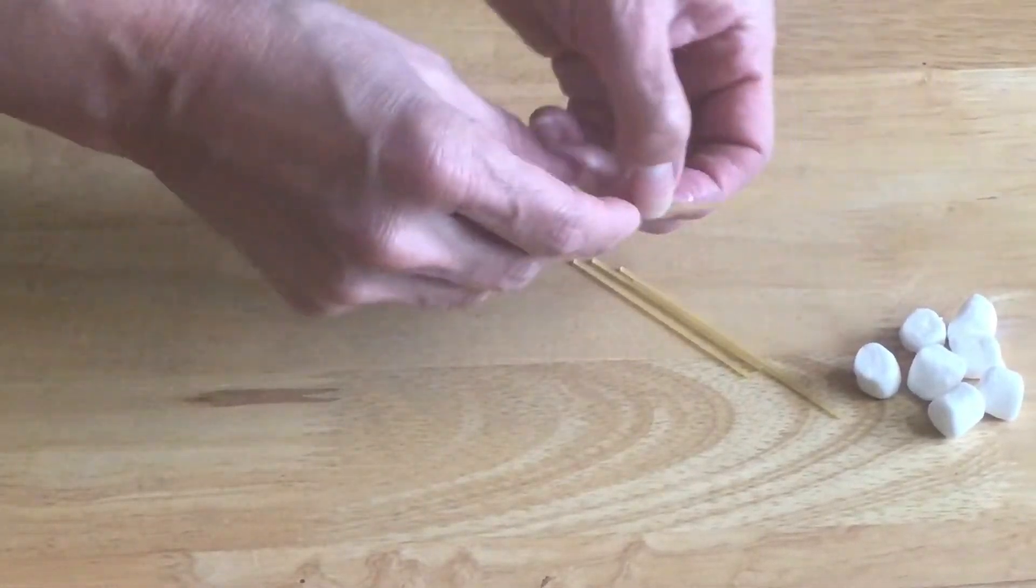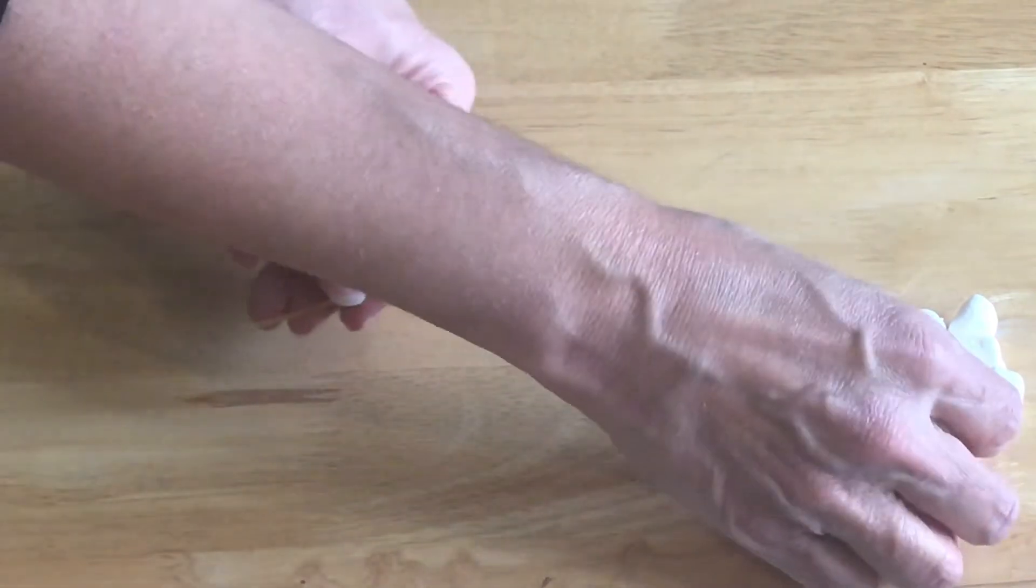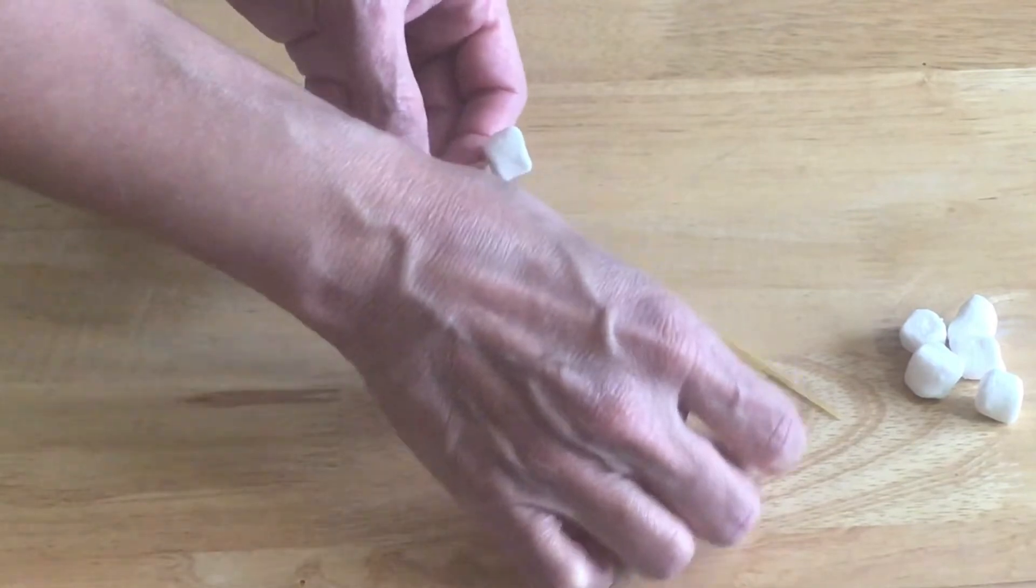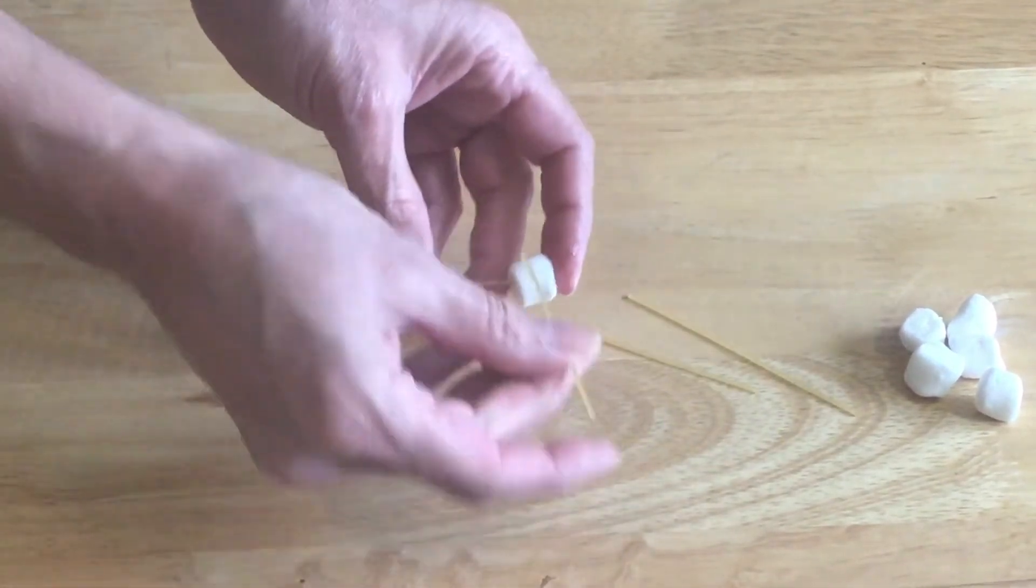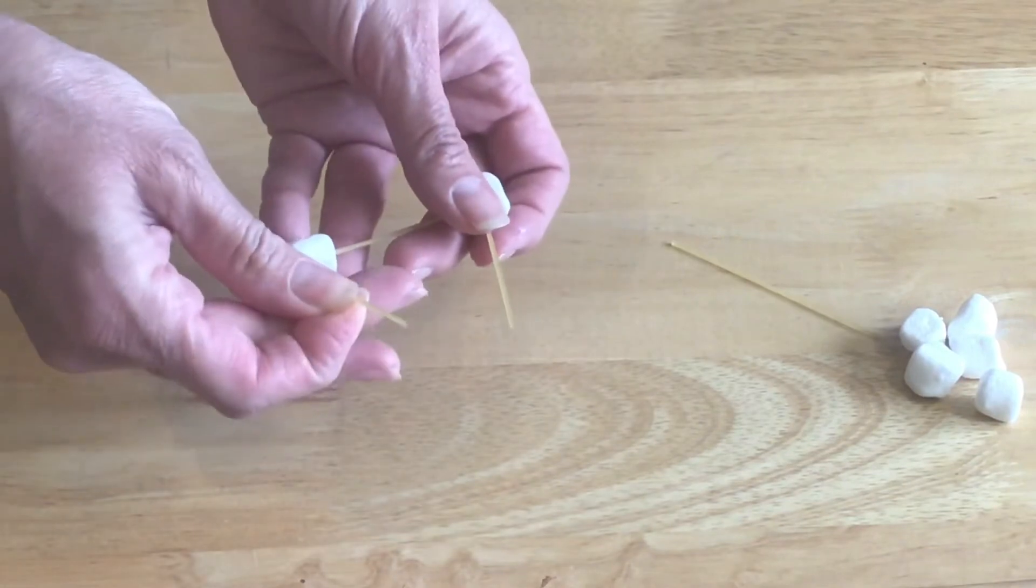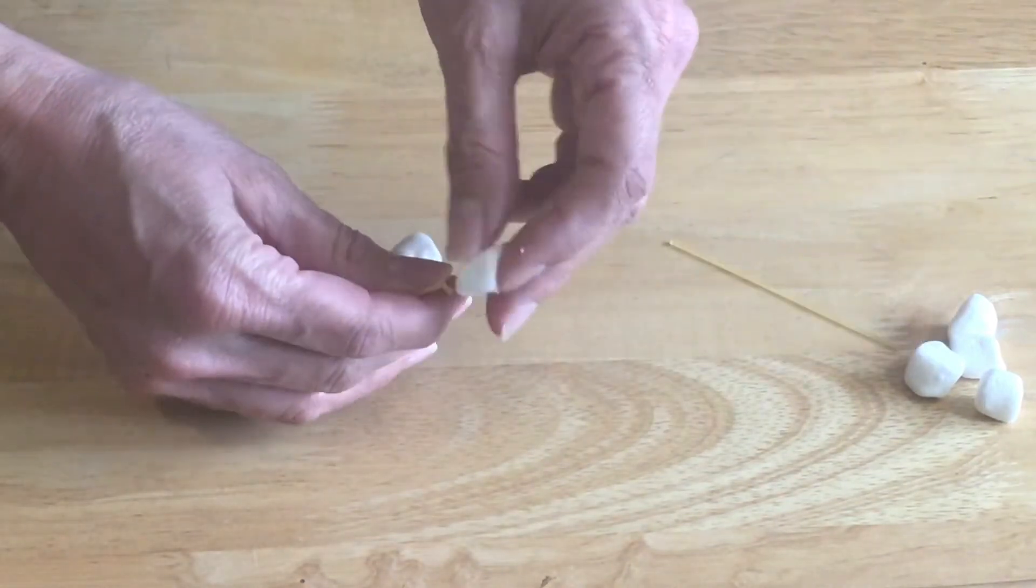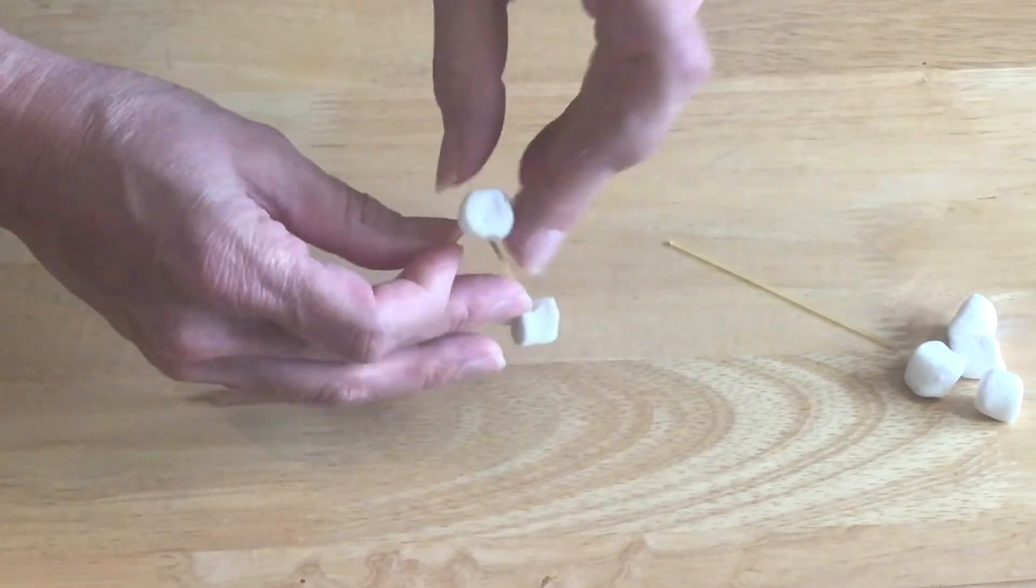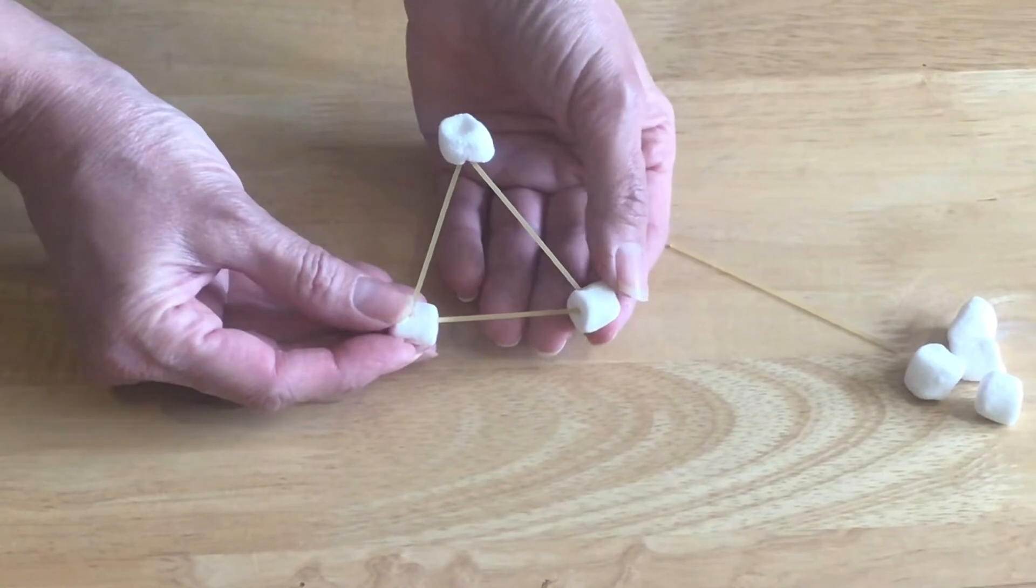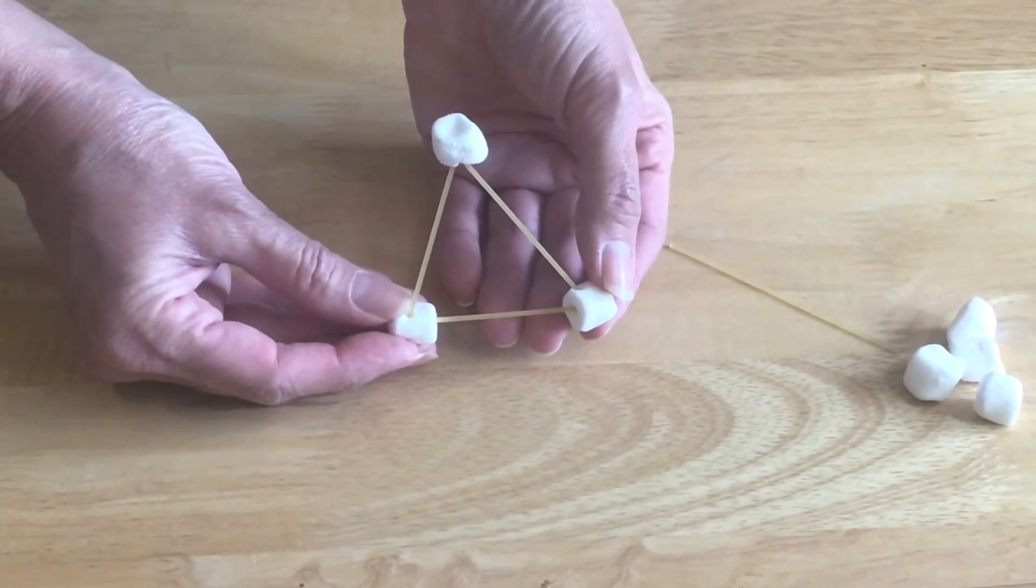So we're going to start by building some shapes. We're going to start with putting a marshmallow into the end of a spaghetti noodle or toothpick, and we're going to add some more noodles. If we put a marshmallow at the top of our shape, you can see I have built a triangle. You can also start by building squares or rectangles or any other shape you'd like.